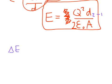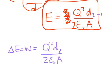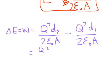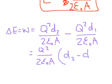Change in energy, which is equal to the work. Work done is Q squared D2 over 2 epsilon naught A minus Q squared D1 over 2 epsilon naught A. Because those are all constant, we can factor out Q squared over 2 epsilon naught A times (D2 minus D1).